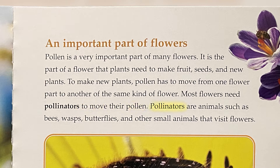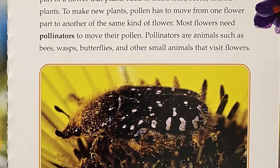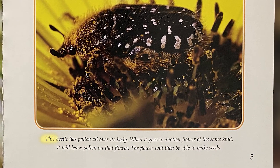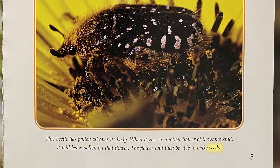Pollinators are animals such as bees, wasps, butterflies, and other small animals that visit flowers. This beetle has pollen all over its body. When it goes to another flower of the same kind, it will leave pollen on that flower. The flower will then be able to make seeds.